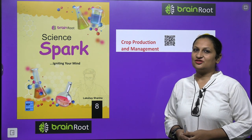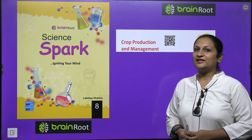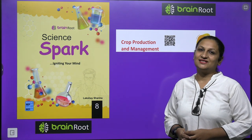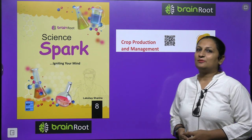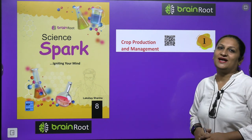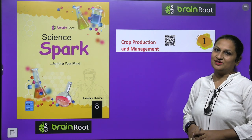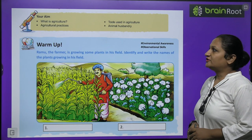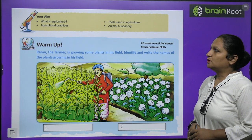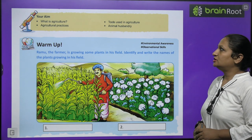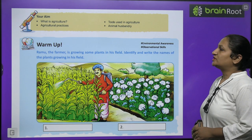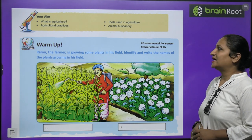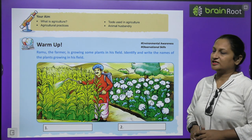Hello my dear children, this is Shikha Arora and today we are going to start with class 8 science chapter number 1, that is crop production and management. The aim of this chapter includes what is agriculture, tools used in agriculture, agriculture practices and animal husbandry.